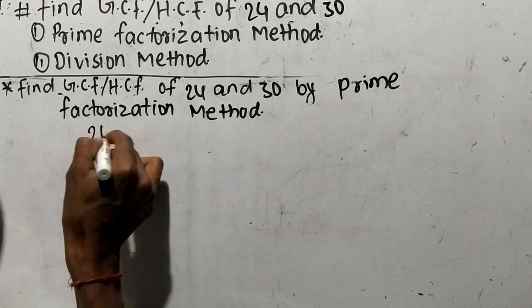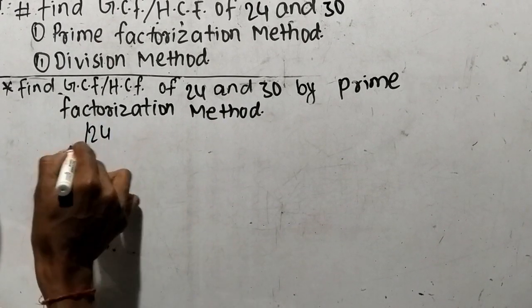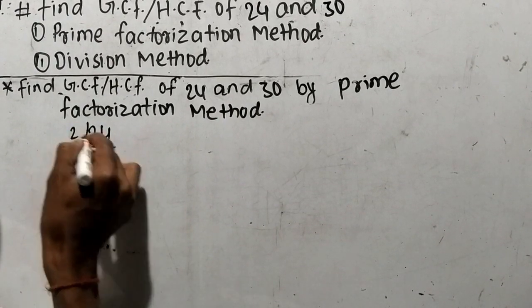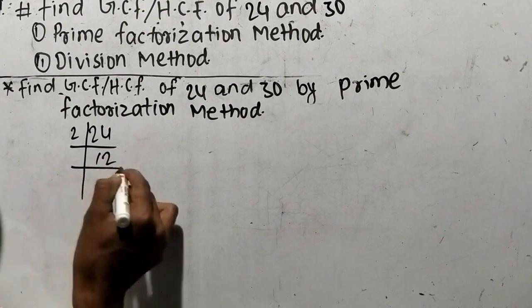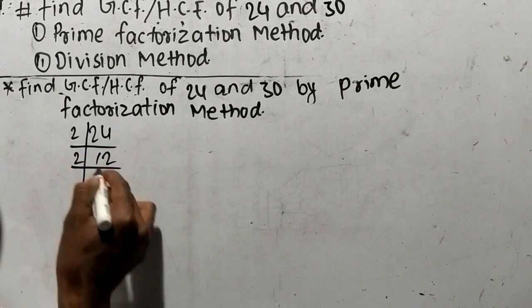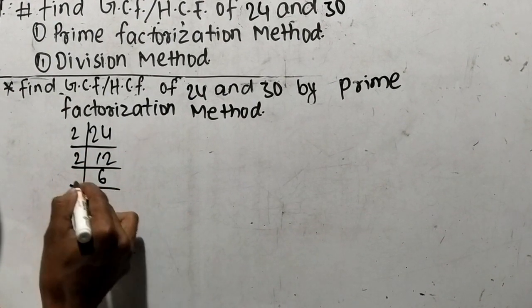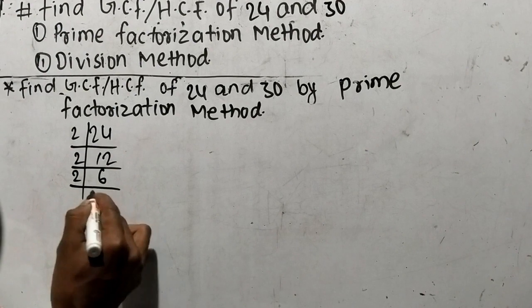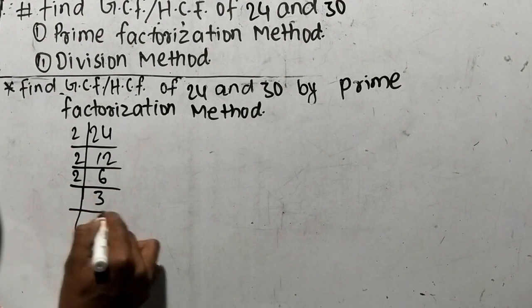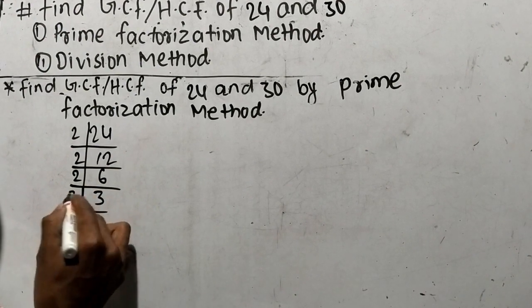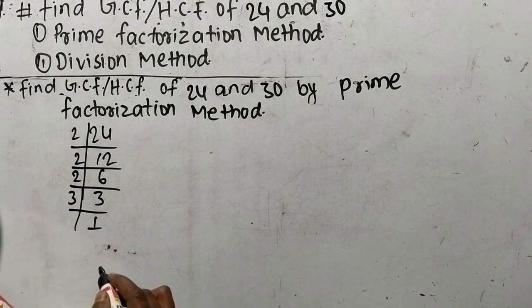Let's find out the prime factors of 24. It is 2 x 12 = 24, then 2 x 6 = 12, then 2 x 3 = 6, and 3 x 1 = 3.